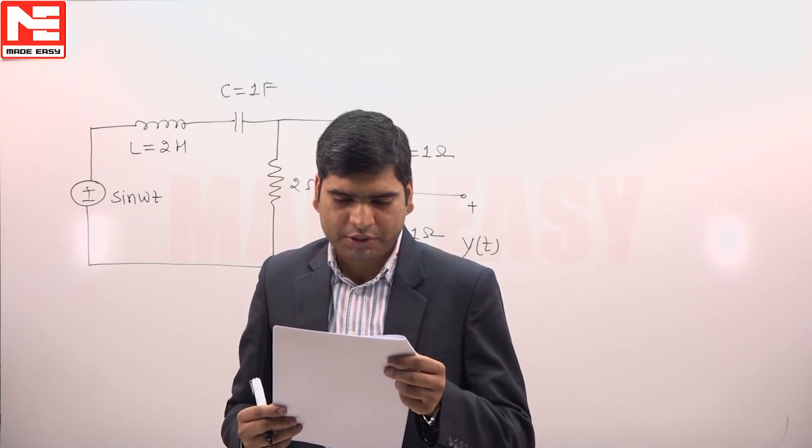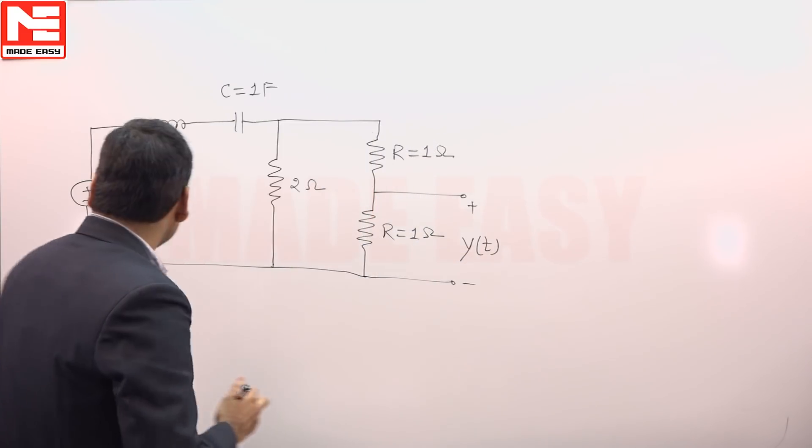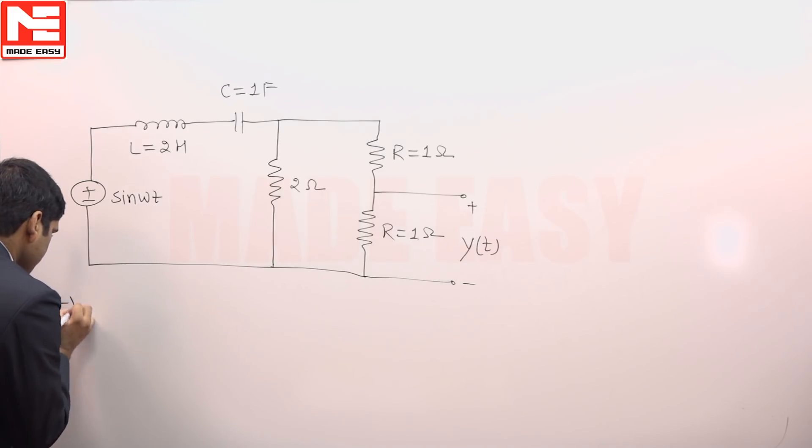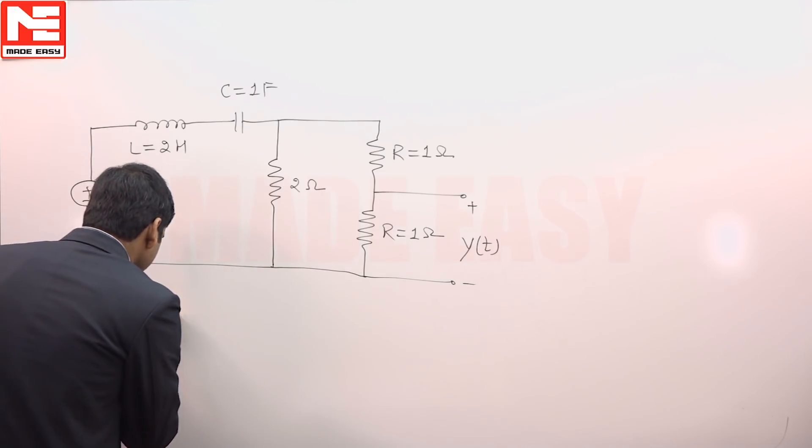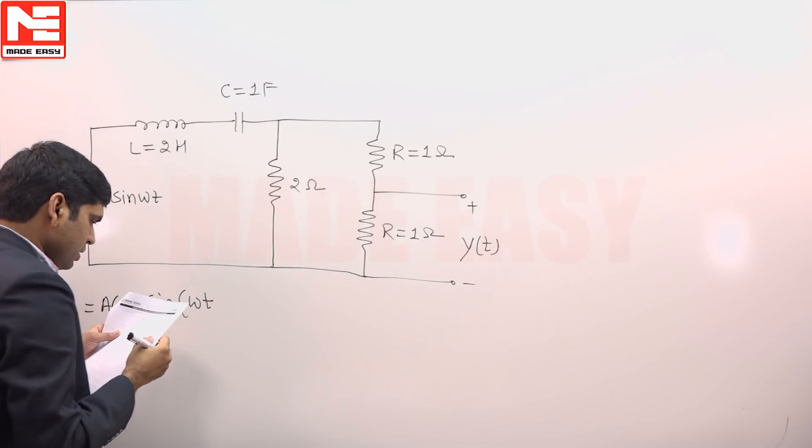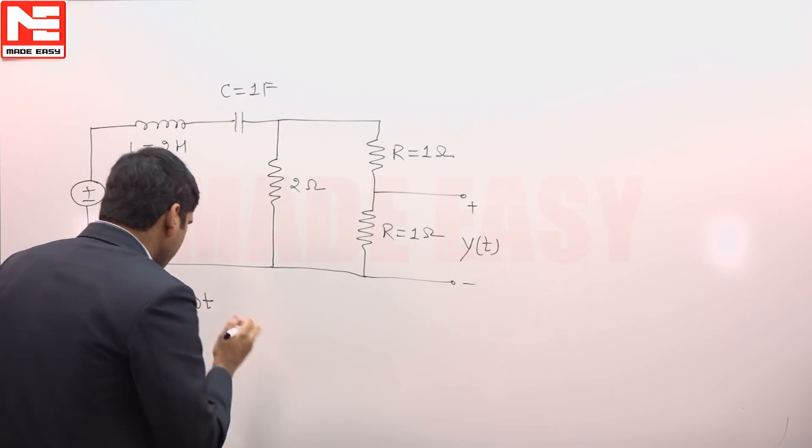The steady state output of the circuit below is given by y(t) = A sin(ωt + φ), where φ(ω) is minus 45 degrees.